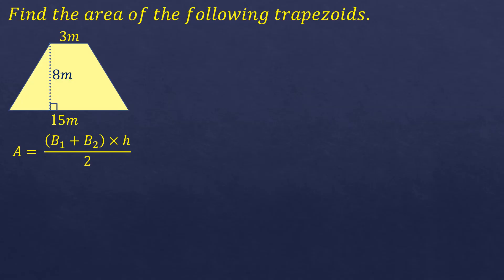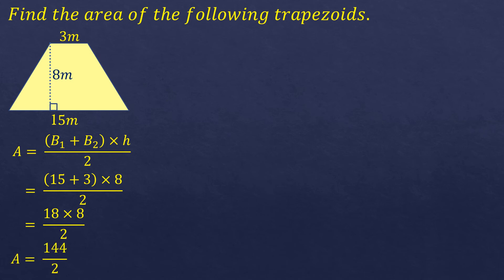So we have the first base of 15 meters and the second base of 3 meters, with a height of 8 meters. 15 plus 3 is 18, 18 times 8 is 144, divided by 2 gives 72 square meters — the area of the given trapezoid.